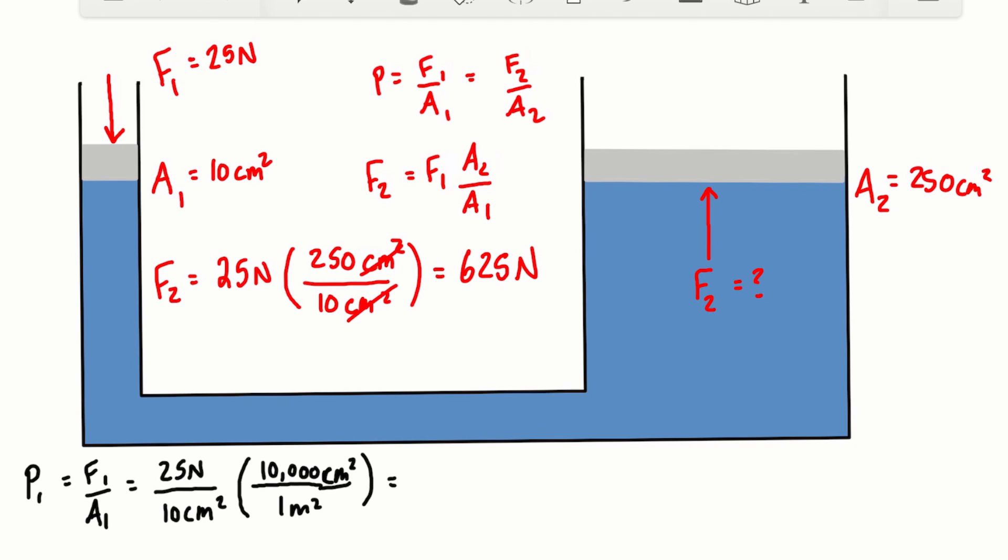And so 25 divided by 10 times 10,000 is going to be 25,000 newtons per meter squared, which is also pascals. Or we can also write this as 25 kilopascals.